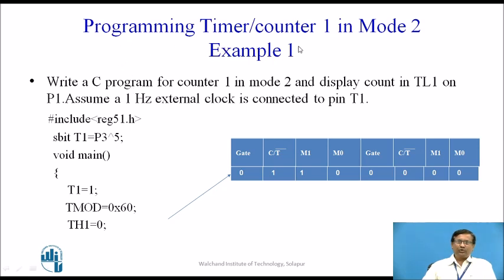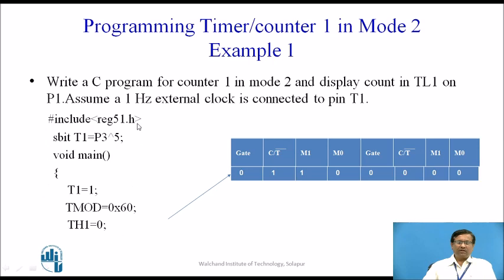Programming Timer Counter 1 in Mode 2: We are writing a C program for Counter 1 in Mode 2 and displaying the count in TL1 on Port 1, since we are using Timer 1 as a counter. Assume a 1 Hz external clock is connected to pin T1. T1 is associated with Timer 1, so after every 1 second a pulse on T1 will increment TL1, and this count will be available on Port 1.